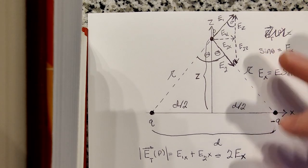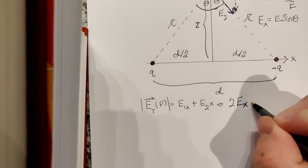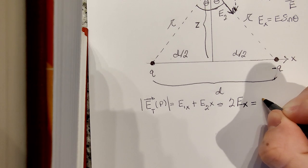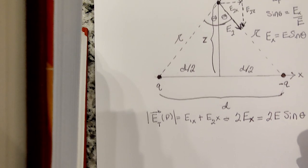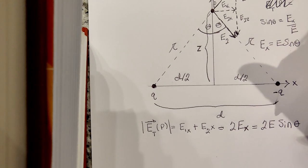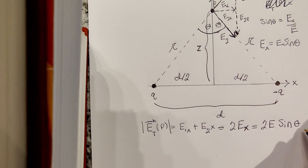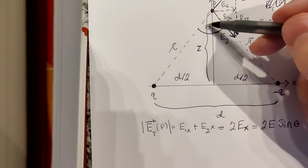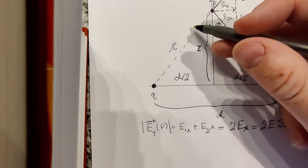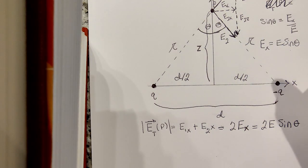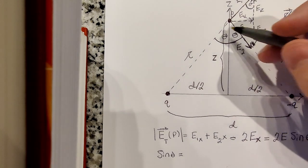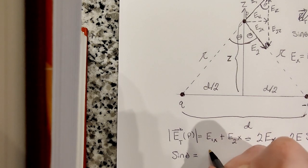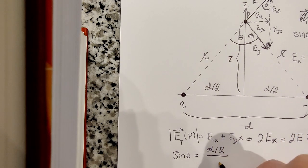So replacing that into here, we get that the magnitude of the total field is just 2 times E times sin theta. And we can also simplify this even more by the fact that sin theta also has another relationship. This is a right triangle. So we can say that sin theta is also equal to opposite over hypotenuse, so d over 2 over script r or d over 2 script r.